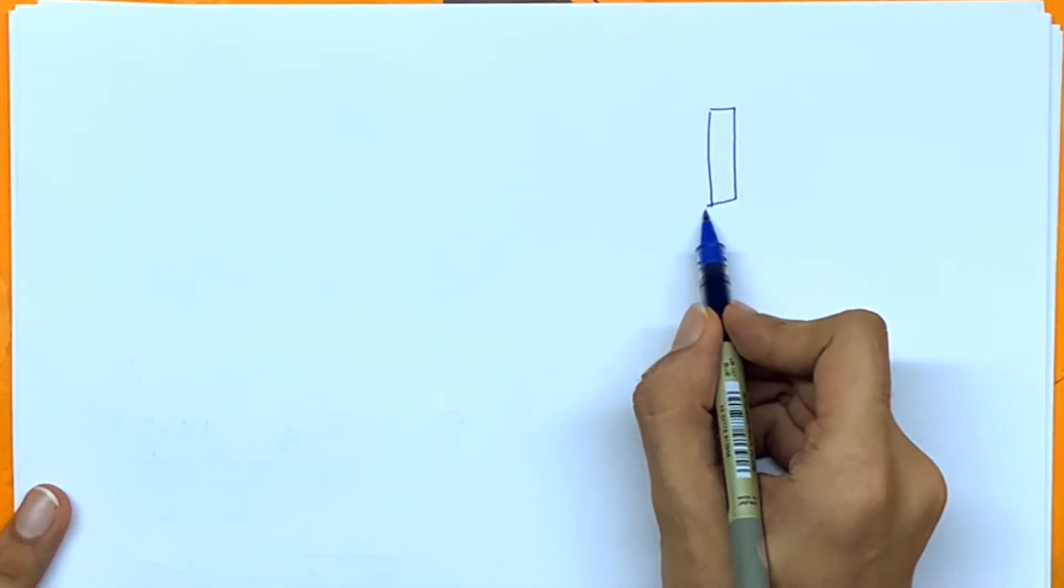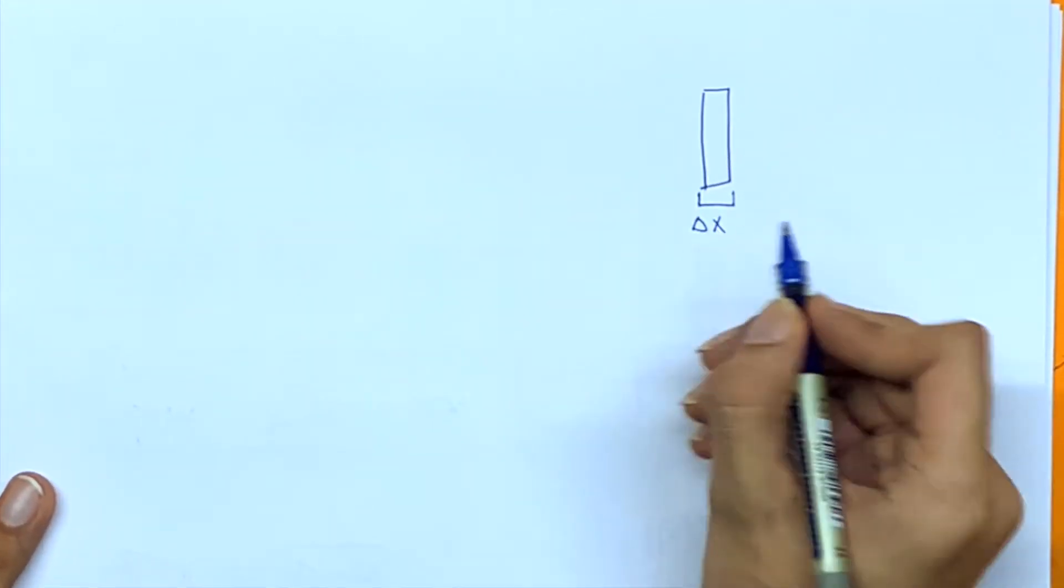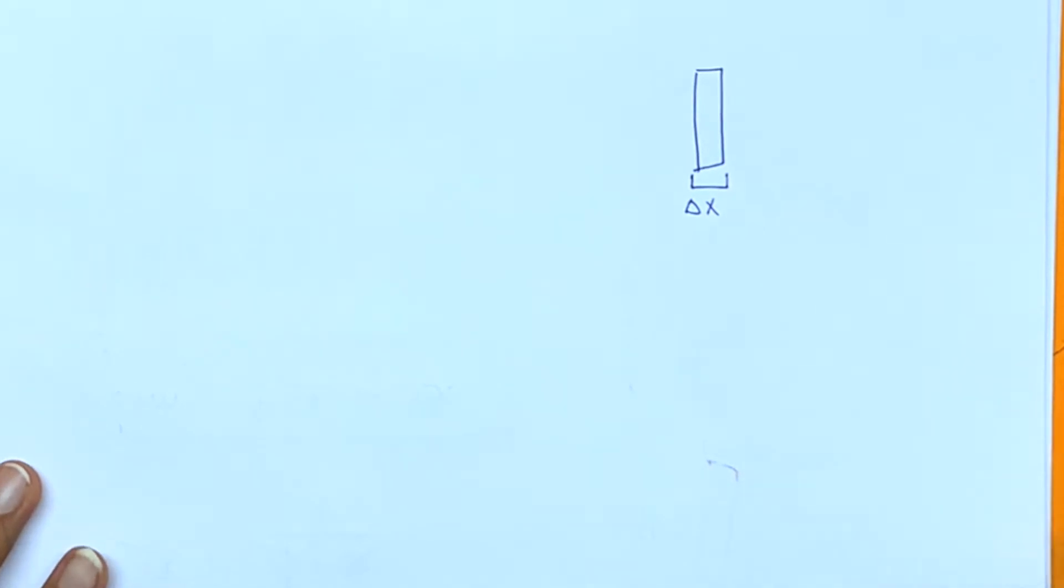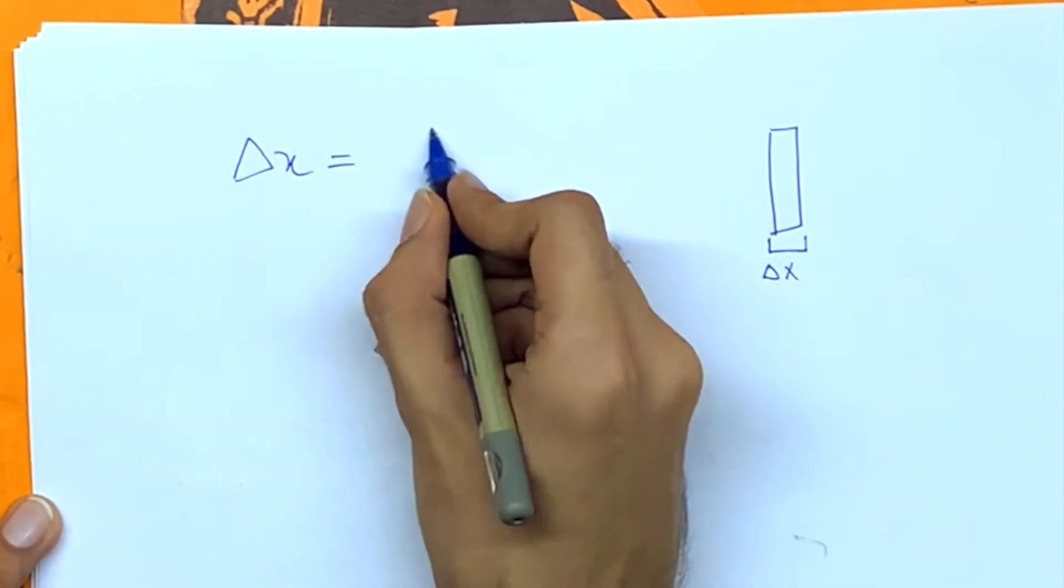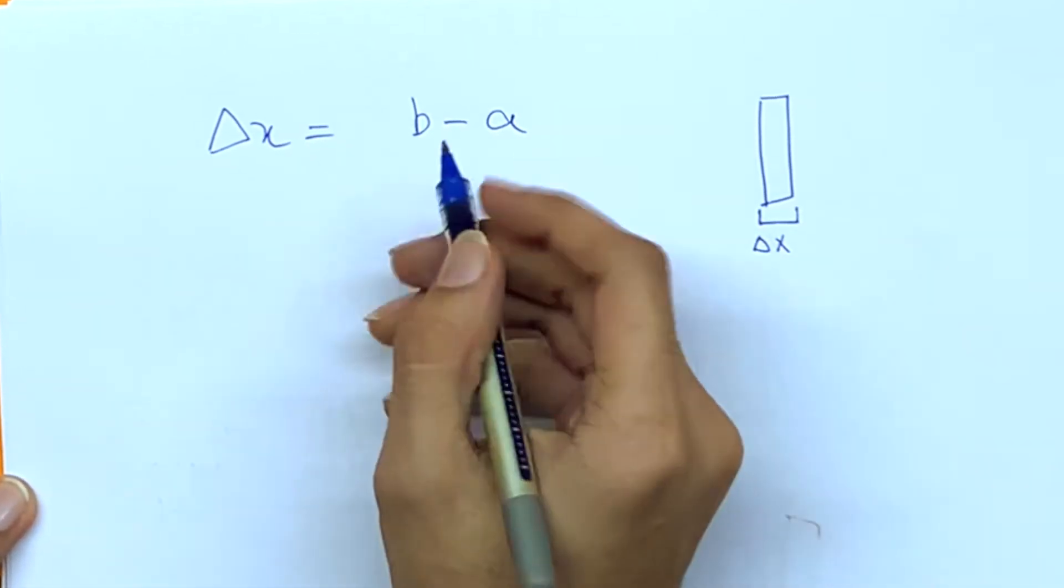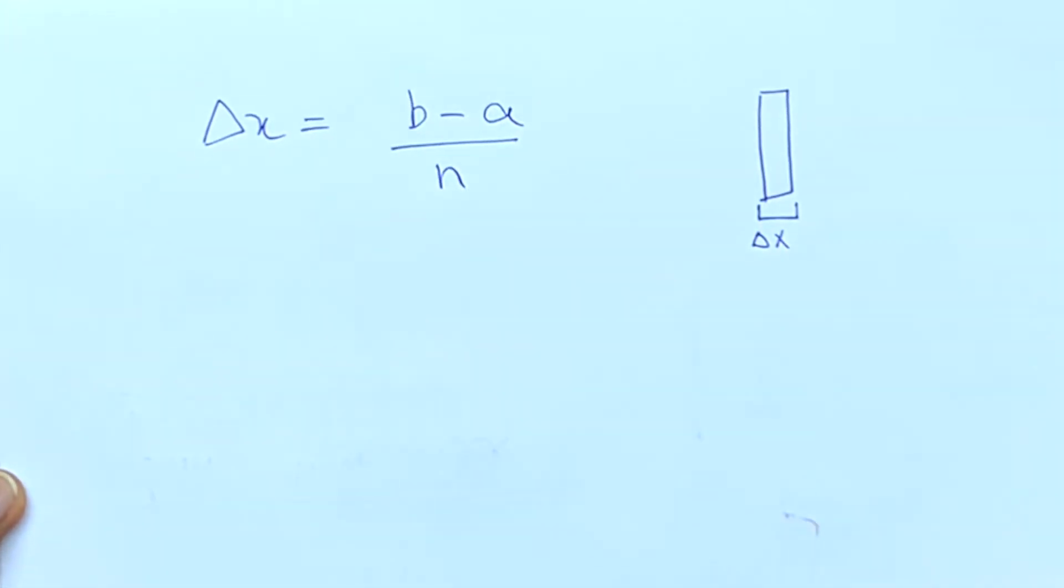Since we're increasing the number of rectangles, that would mean the value of delta x would decrease because we're still under the same boundary. So delta x is defined as b minus a, which is the upper boundary and the lower boundary divided by the number of rectangles we want.